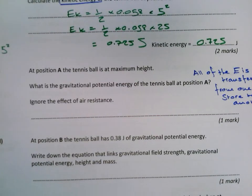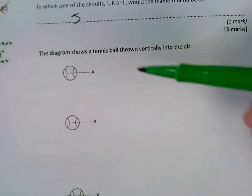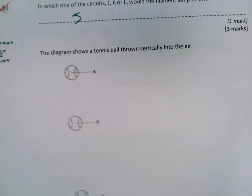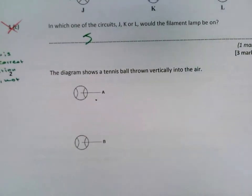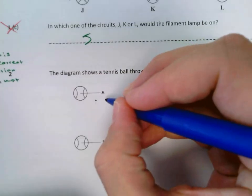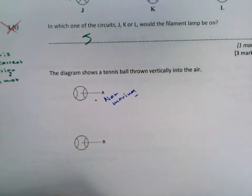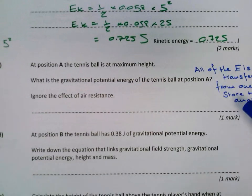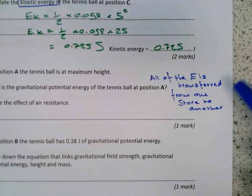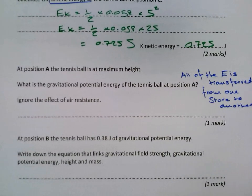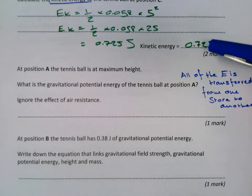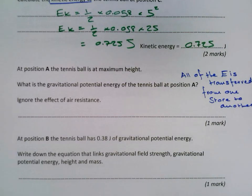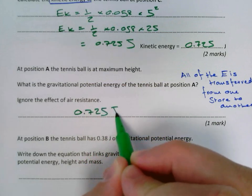Quite a nice part to the question, this. At position A, the tennis ball is at maximum height. This is position A, so the tennis ball is in the air. It's not going any higher. It's as high as it could get. It's not moving at this point as well. That's a key thing to note. At the very top, you can imagine doing this, it's not moving. So it doesn't have any kinetic energy at the top. Why? Because it's not moving. I've written this here. All of the energy is transferred from one store to another. It's transferred from the kinetic energy store to the gravitational potential energy store. So it wants to know what the gravitational potential energy of the tennis ball is. It's going to be the same as the kinetic energy store. Because all of the kinetic energy is transferred into the gravitational potential energy store. So it's 0.725 joules.